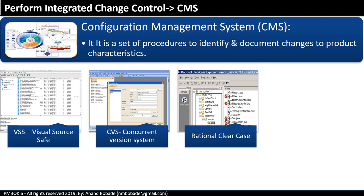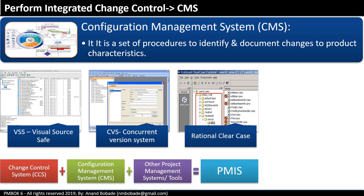Configuration management system is a subsystem of the overall project management system. If you put together different systems — like the change control system, the configuration management system, and other project management tools — all of these together can be called a Project Management Information System.